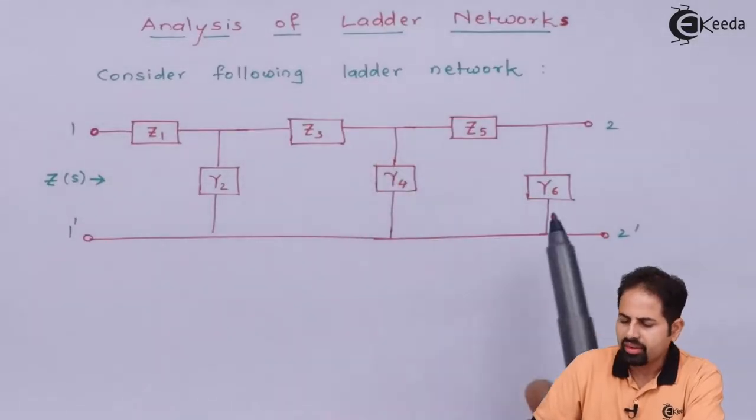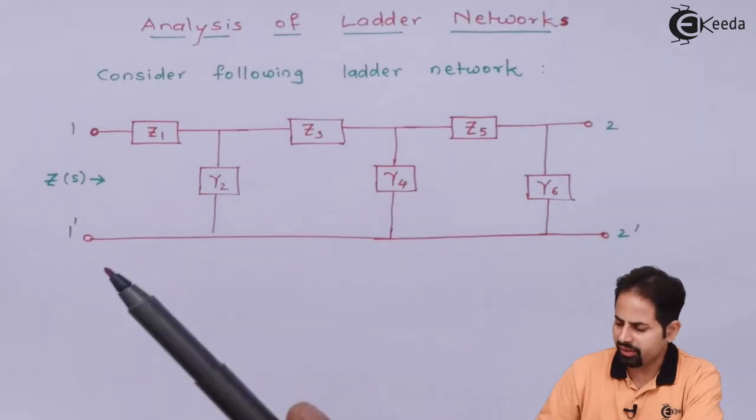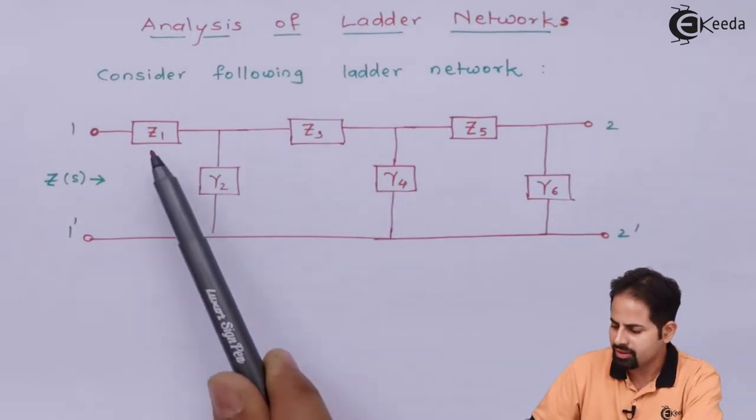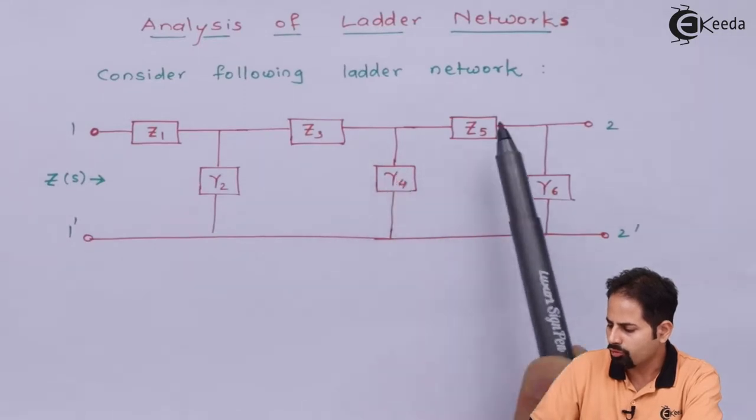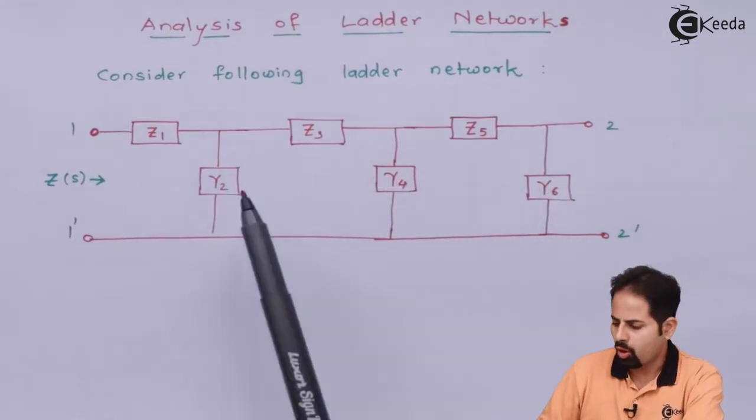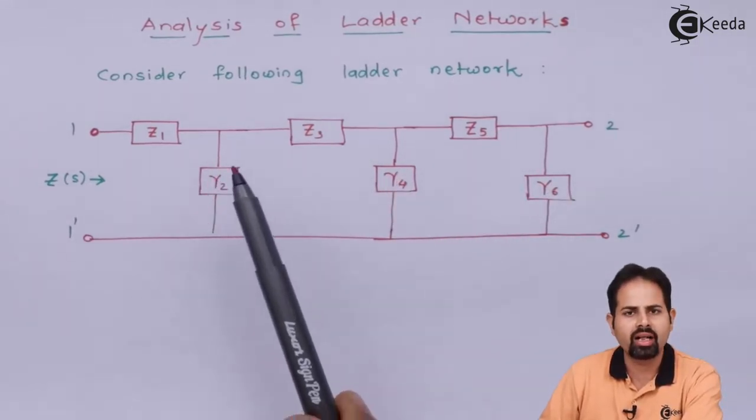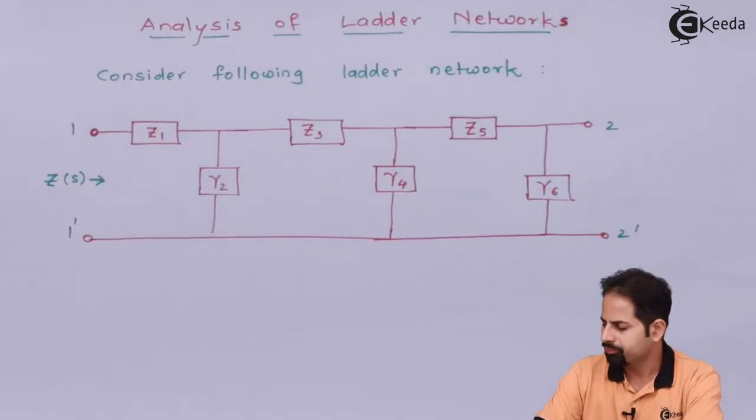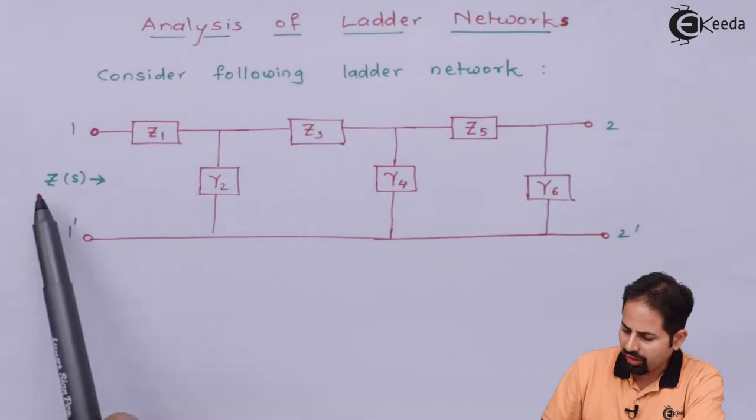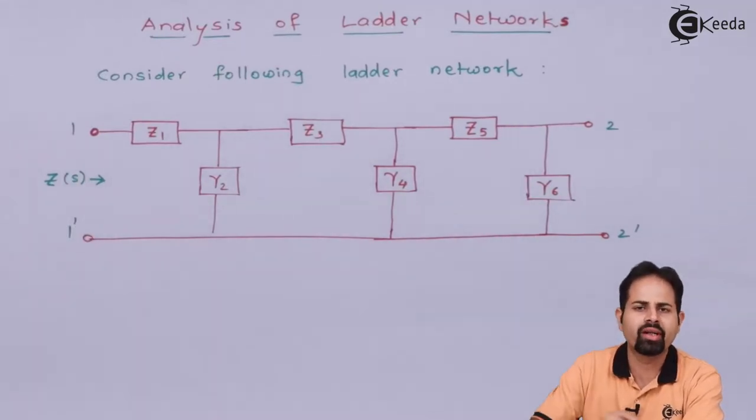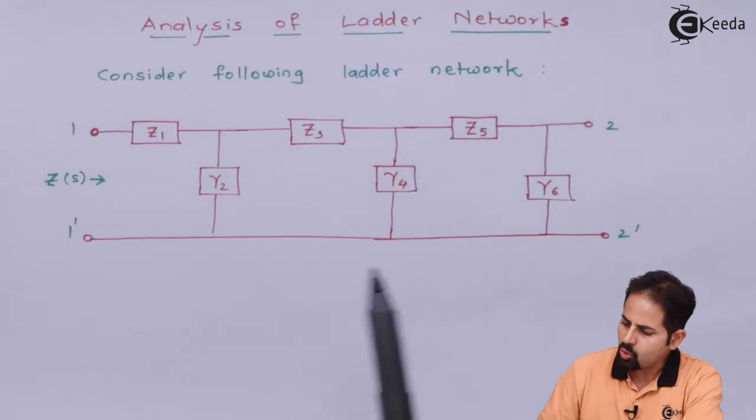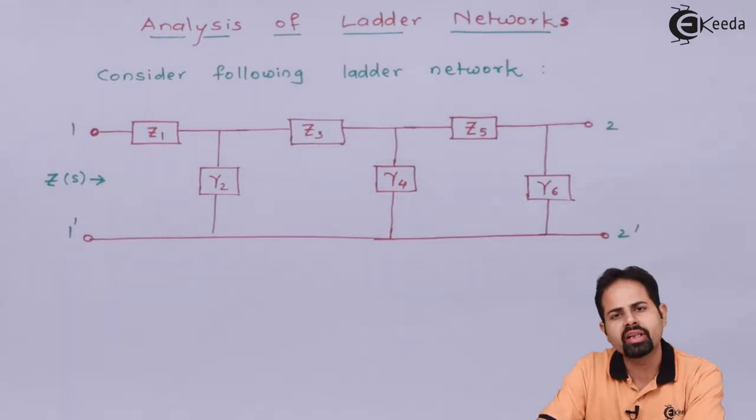Here you can see I have drawn a specific circuit where there are impedances and admittances Z1, Y2, Z3, Y4, Z5 and Y6. So we know that admittances are connected in parallel and impedances are in series. And we are supposed to find Z, that is equivalent impedance or we can say input impedance. So let us see how to find it by using ladder network.